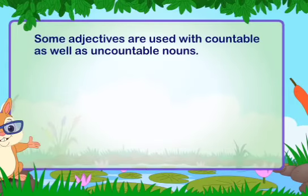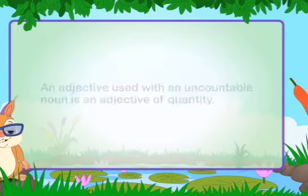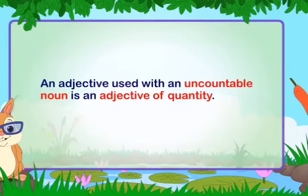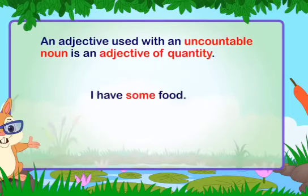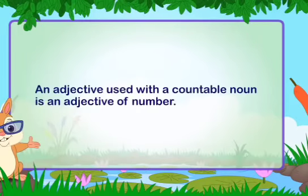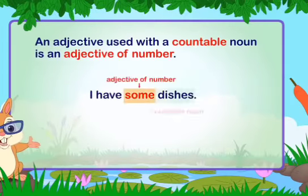Some adjectives are used with both countable and uncountable nouns. Remember: an adjective used with an uncountable noun is an adjective of quantity — for example, 'I have some food.' An adjective used with a countable noun is an adjective of number — for example, 'I have some dishes.'